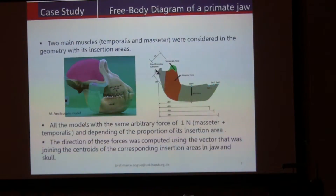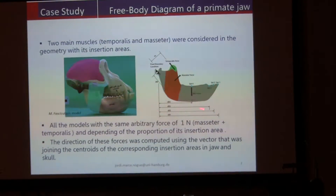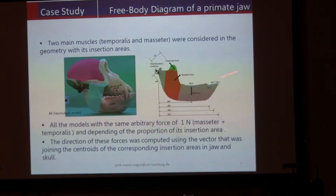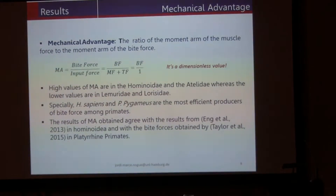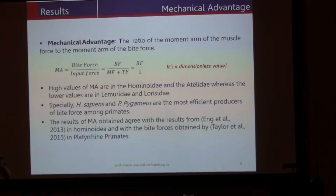What I am doing is creating models of the jaws, considering the forces from the masseter and the temporalis muscles, and considering different positions of the bite: incisor, canine, premolar, and molar. Just calculating the balance of forces — my input data are the muscle forces, and the solution I am solving for is the bite force. I am using what is called the mechanical advantage, which is just the bite force divided by the input force — it is like an efficiency of the jaws.